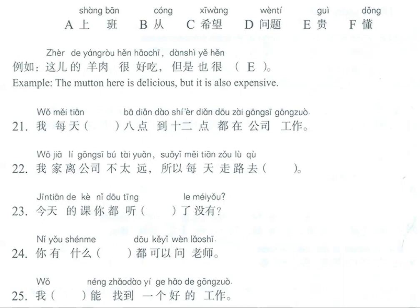First, I'm going to translate these sentences and expressions. The words: shāngbān — to work; cóng — from; xīwàng — to hope; wèntí — question; guì — expensive, used in the example; and dǒng — which means understand.